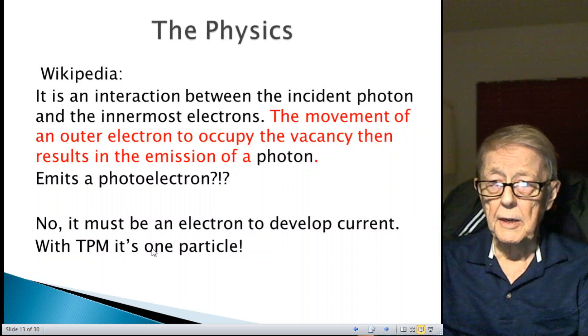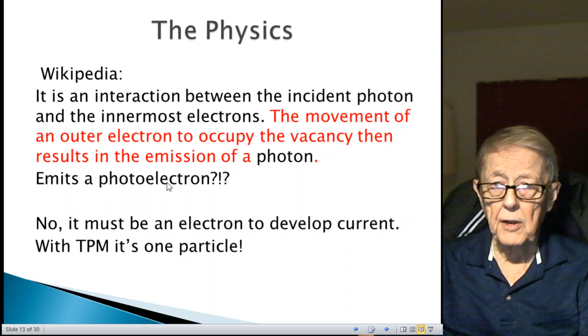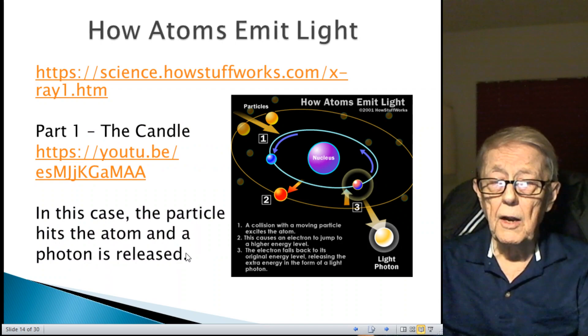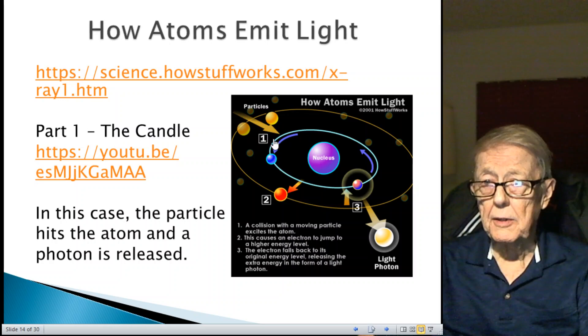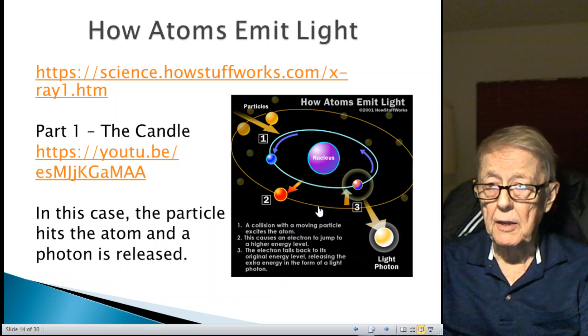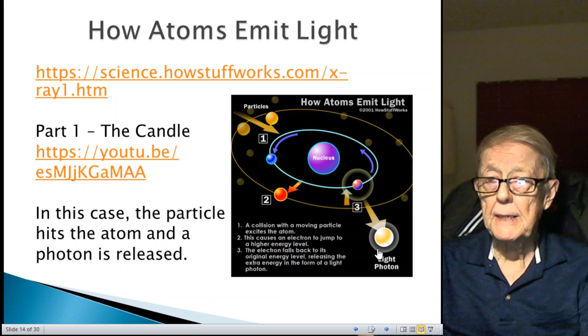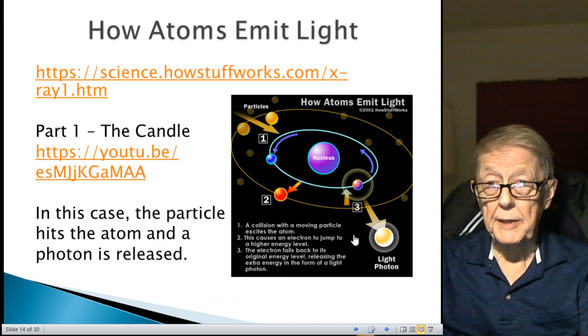I interpret it as an electron. The only way you can develop current through that current meter is to have the electron flowing through it. So it's emitting an electron, not a photon, not a photoelectron, but an electron, by my interpretation. This whole idea that you hit an innermost electron and it leaves a hole by jumping up and then it falls back down and creates. In my video called The Candle Part 1, I talked about this, and this graph is from this link. In this case, it's a particle hitting the innermost electron. It jumps up to a level, then falls back down and releases energy in the form of a photon.